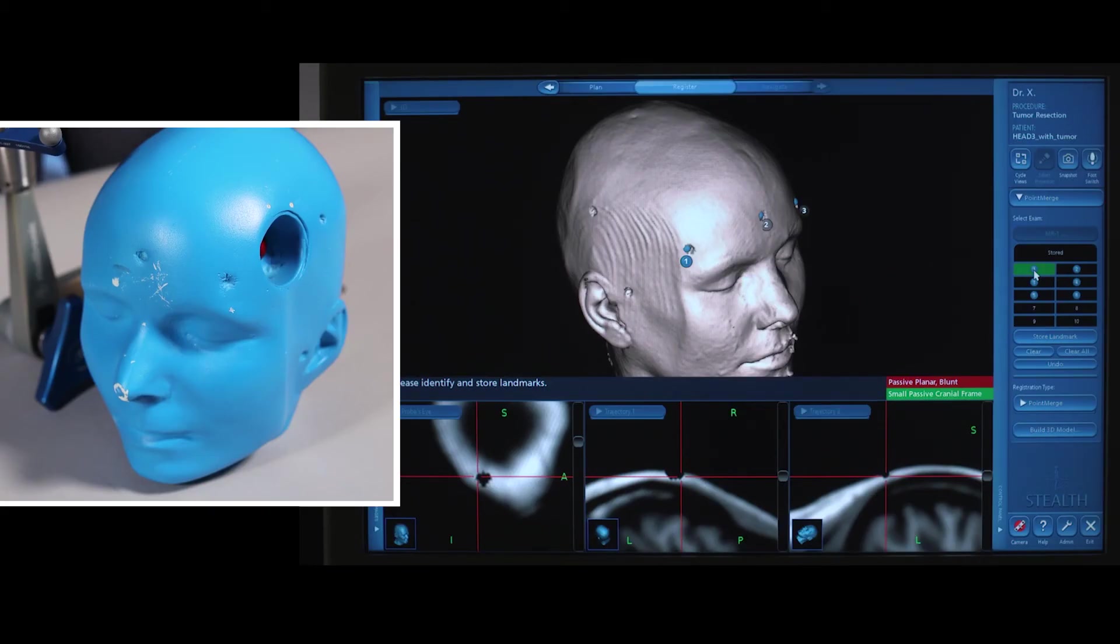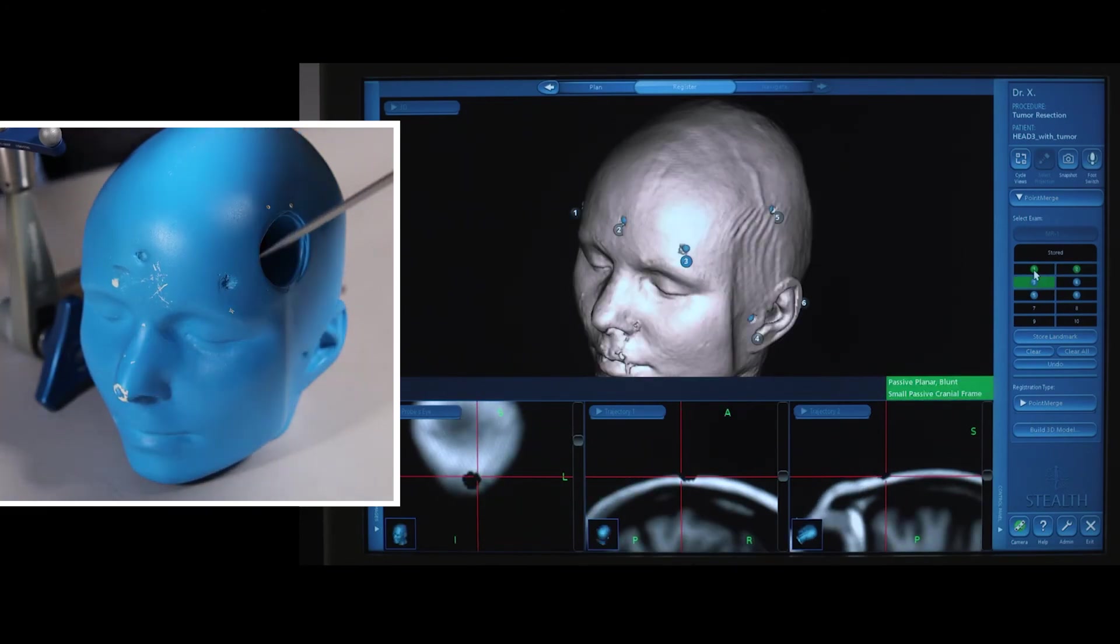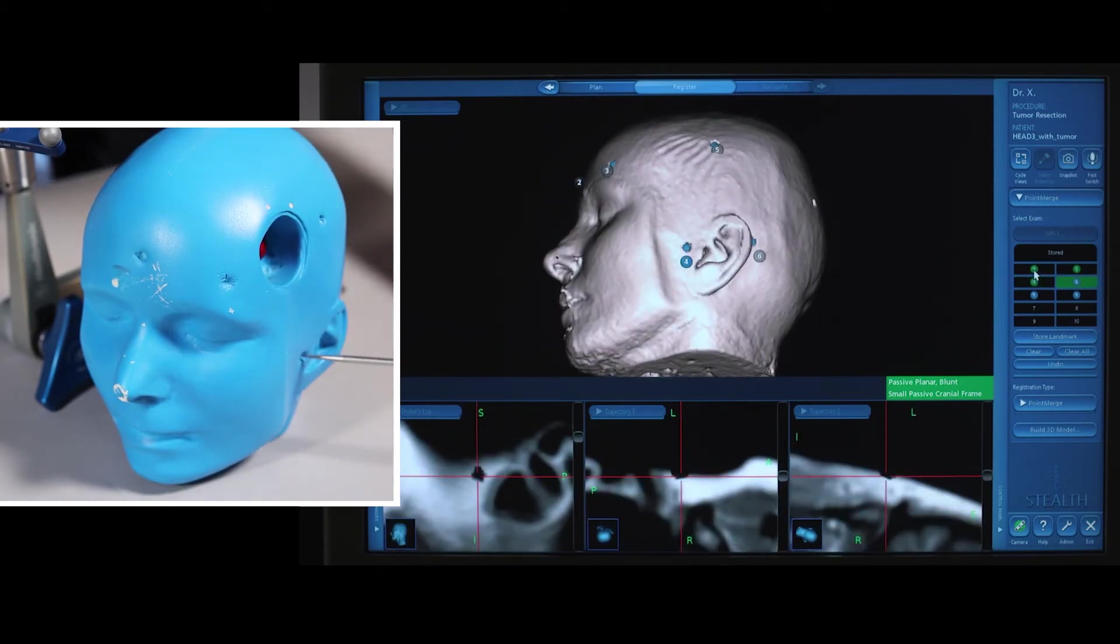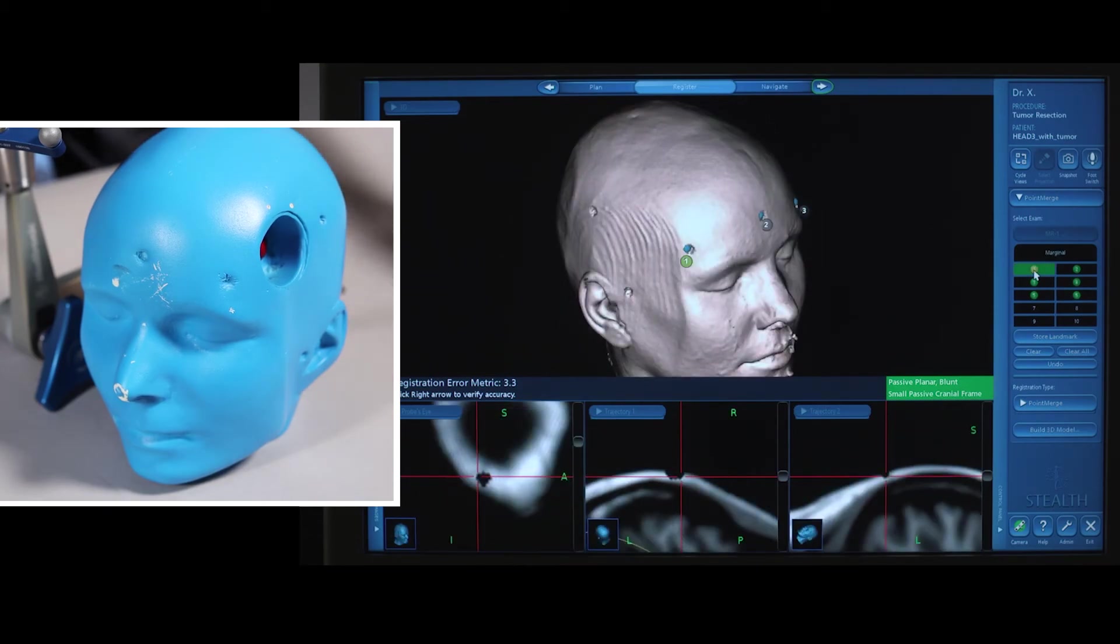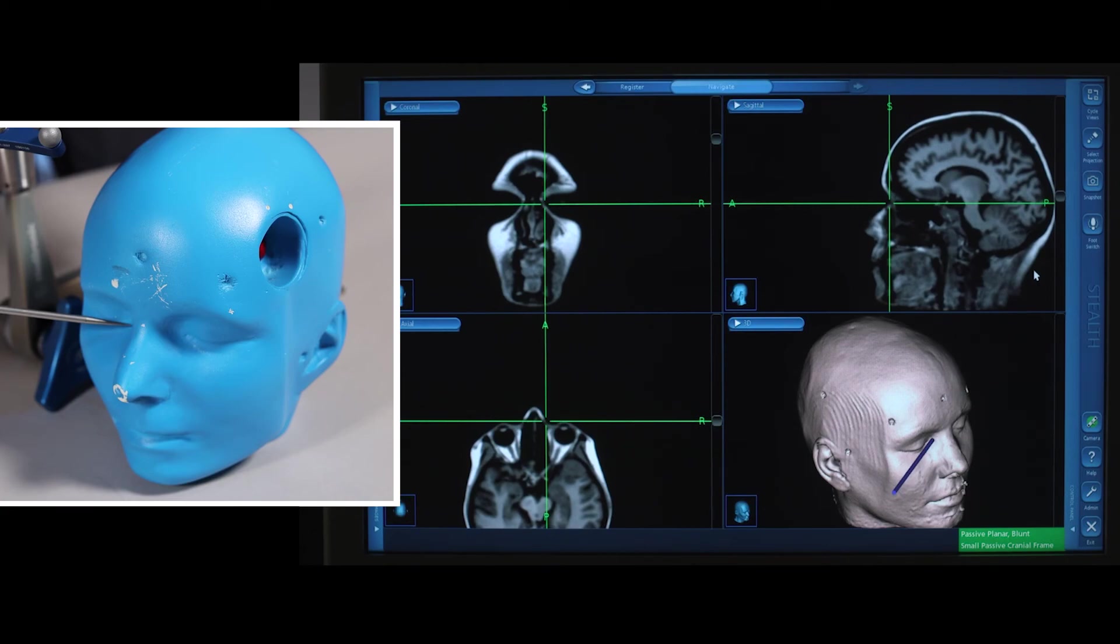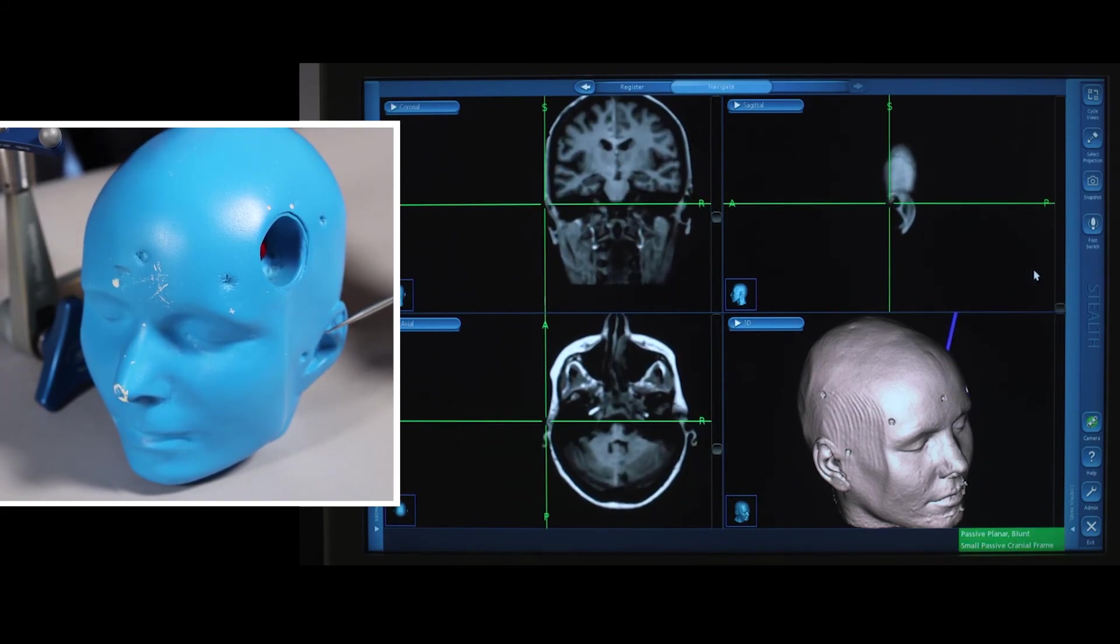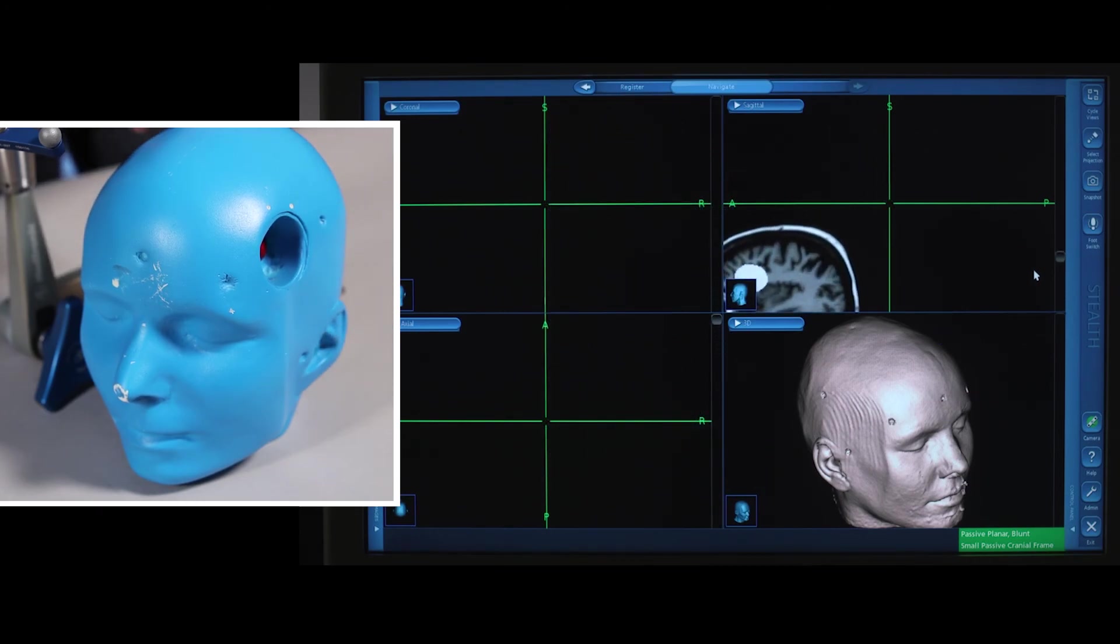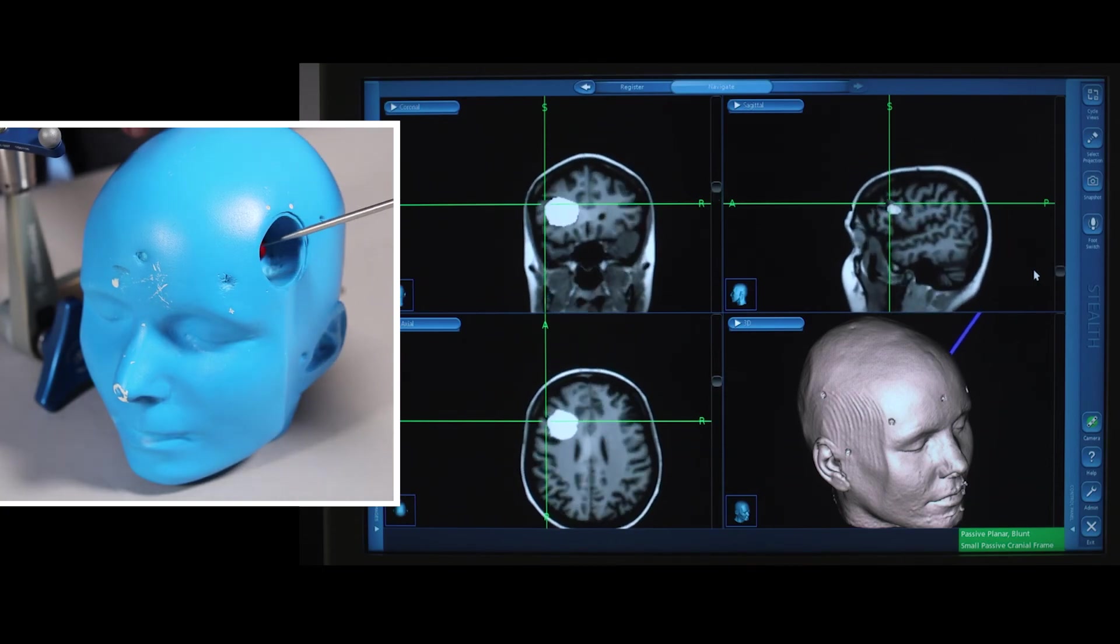To register the patient, touch the predefined anatomy in sequence. Once an accuracy has been achieved, move forward by hitting next on the frame or using the next to navigate. Have your surgeon verify anatomy by touching known landmarks on the patient, such as the right lateral canthus, medial canthus, tip of the nose, nasion glabella, left or right tragus, or any other anatomy that's able to be located on the patient. You'll see here that we can actually navigate on this particular model and access the tumor directly.